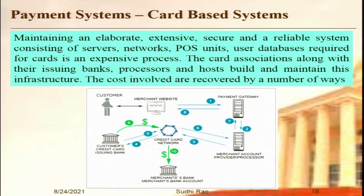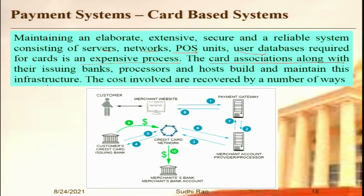Let us briefly look at how card processing happens one more time. Maintaining an elaborate, extensive, secure, and reliable system consisting of servers, networks, point-of-sale units, and user databases required for cards is an expensive process. That is the key function of card networks — Visa, Mastercard, American Express, Discover. They maintain all these systems. The card associations, along with issuing banks, processors, and hosts build and maintain this infrastructure. The costs involved are recovered in various ways.